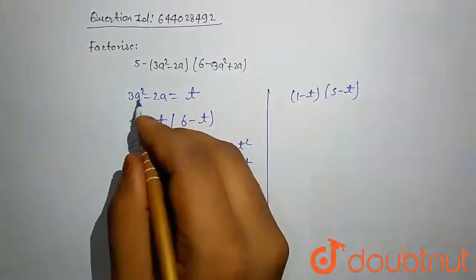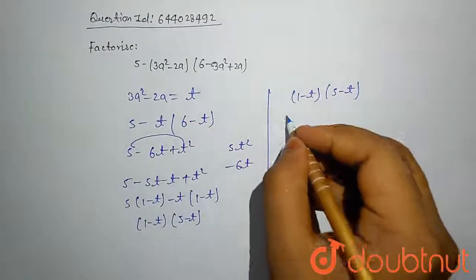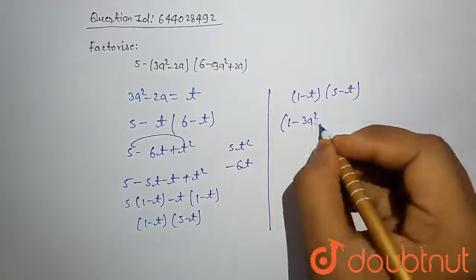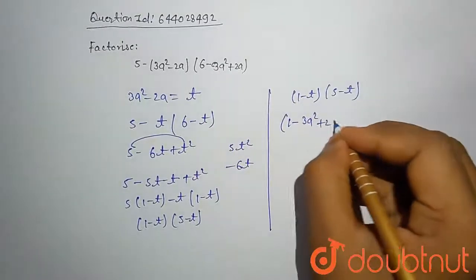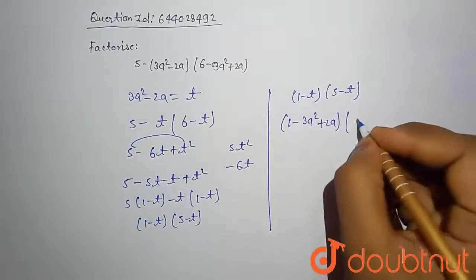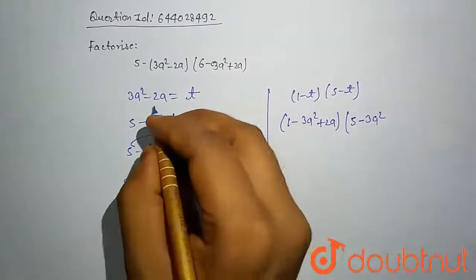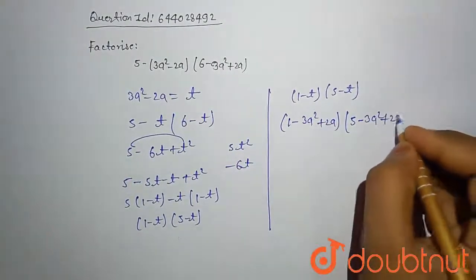Value of t is 3a^2 minus 2a. So: (1 - 3a^2 + 2a) in other brackets (5 - 3a^2 + 2a).